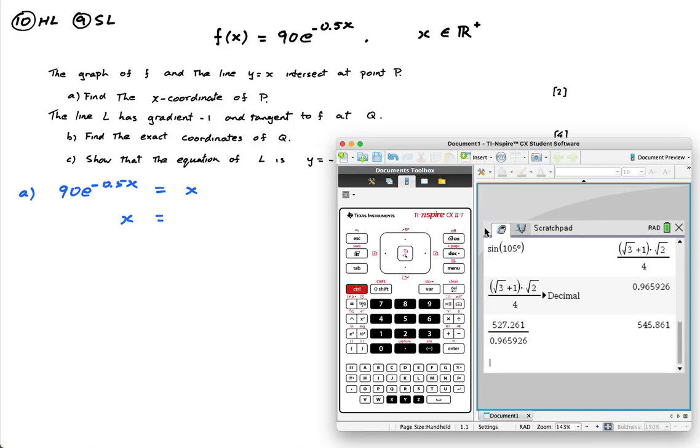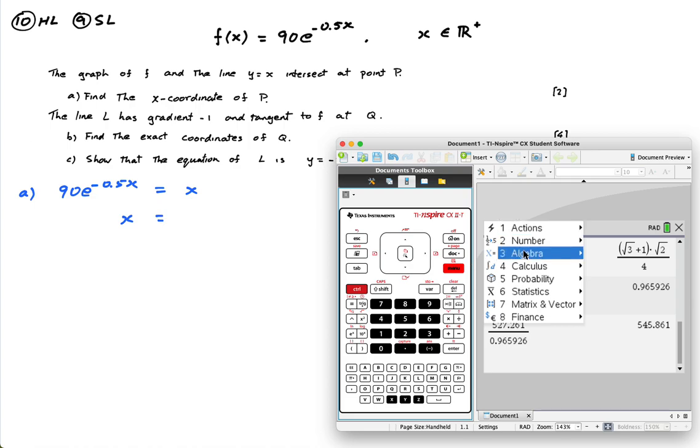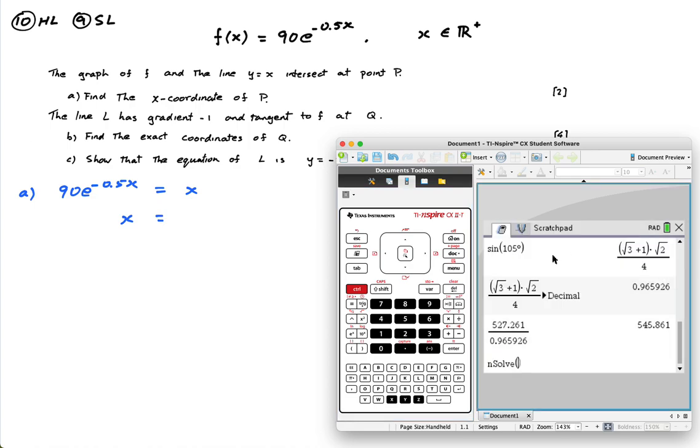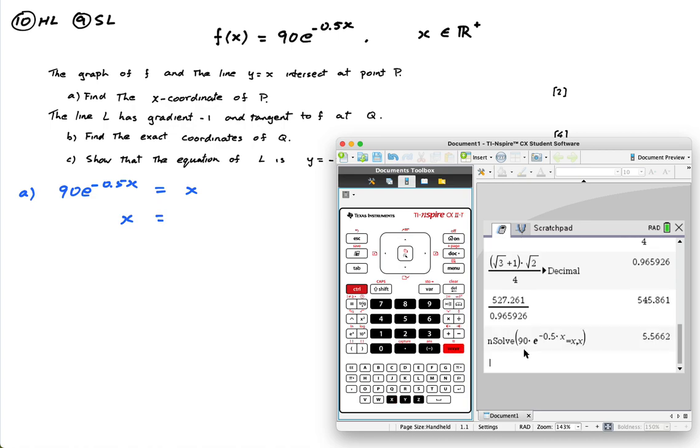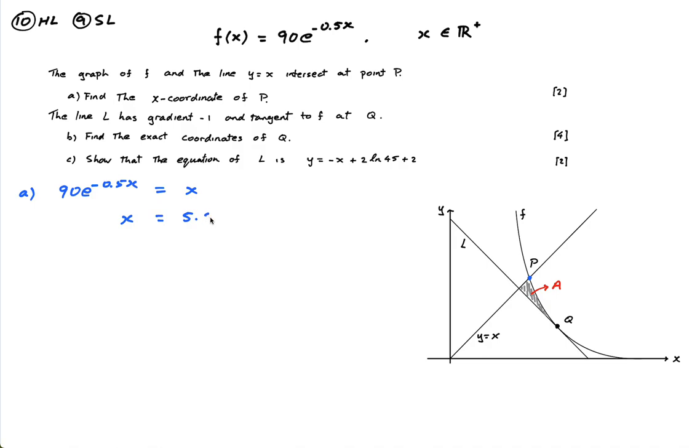Only way to do this guys is on the GDC. So I'm going to do menu, algebra, numerical solve. You could graph it, but I'm just going to use numerical solve. 90e to the minus 0.5x equals x and then comma x. And I get 5.5662.